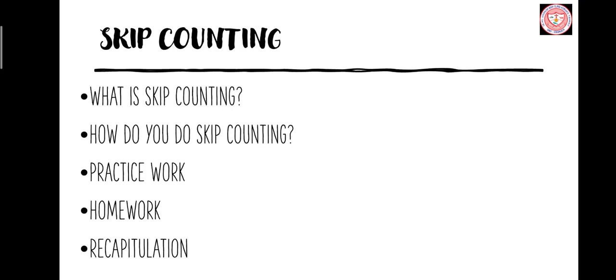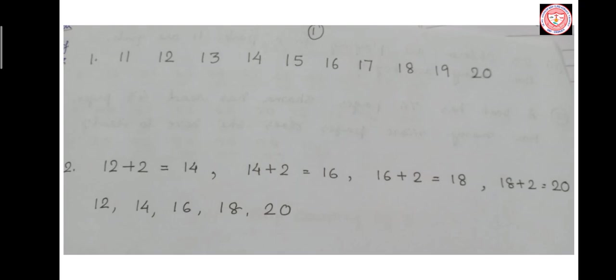So children, how do you do skip counting? To skip count, you add the same number over and over. You can start at any number. When you count normally like 11, 12, 13, 14, 15, 16, 17, 18, 19, 20 — you add one to get the next number.